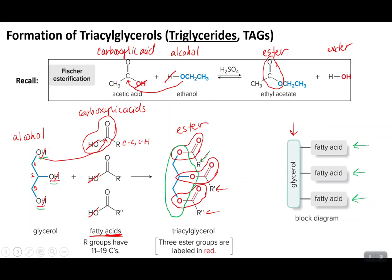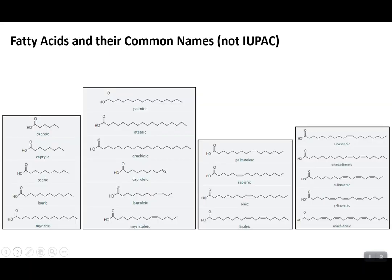Let's look at fatty acids a bit more deeply. These are the most common fatty acids we will encounter, listed here with their common names rather than IUPAC naming. What they all have in common is a carboxylic acid group, which reacts with glycerol to make triglycerides. They also all have long carbon-hydrogen chains, and some of those chains contain double bonds — sometimes just one, sometimes many.